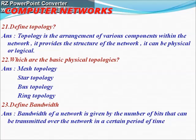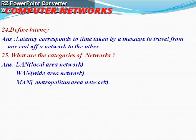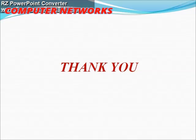Next question: define bandwidth. Bandwidth of a network is given by the number of bits that can be transmitted over the network in a certain period of time. Next question: define latency. Latency corresponds to the time taken by a message to travel from one end of the network to the other. What are the categories of network? The different categories include LAN (Local Area Network), WAN (Wide Area Network), and MAN (Metropolitan Area Network). This completes today's video on interview questions based on computer networking.